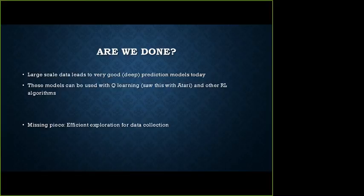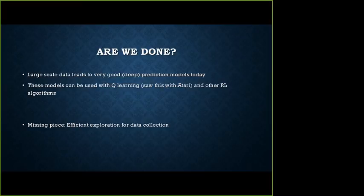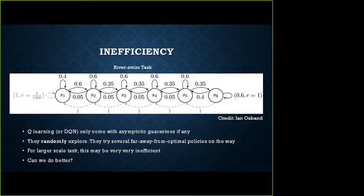So are we done? We beat the best chess player about 20 years ago, and beat the best Go player this year. The interesting thing is yes, large-scale data does lead to very good prediction models — these function approximators can well-approximate the latent unknown Q* functions. But the missing piece is efficient exploration for data collection. If you remember the Q-learning algorithm, taking a random action with probability epsilon — is that the best you can do, or can you do better?